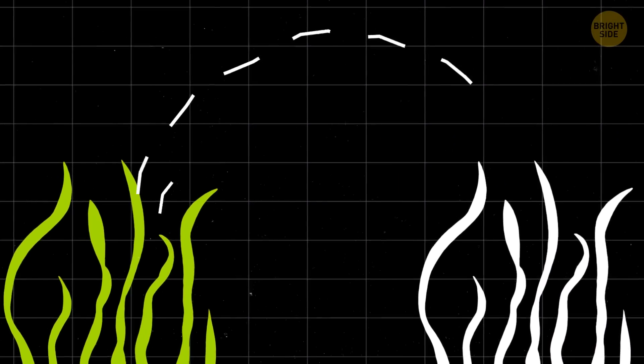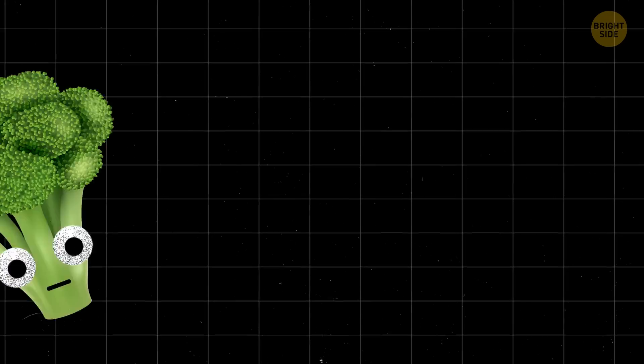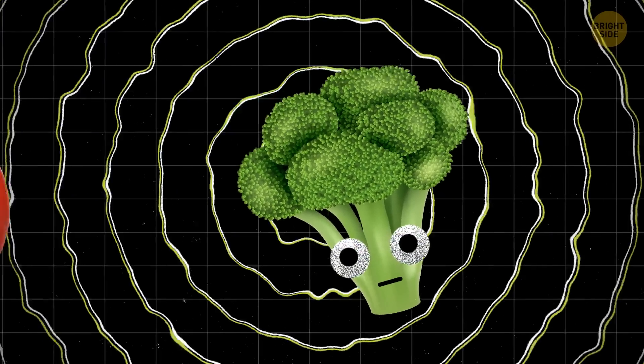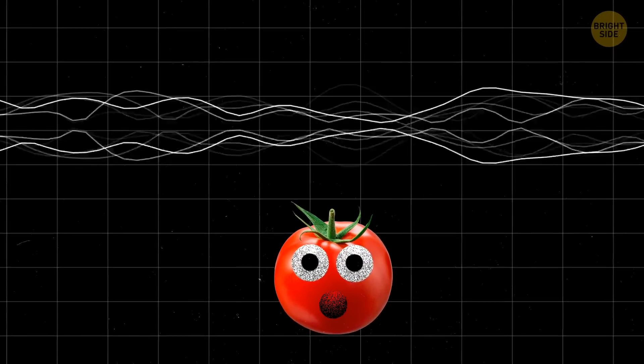Well, it turns out plants can talk. Well, kind of. Scientists found out that plants actually make ultrasonic clicks when they're stressed. Imagine tomatoes and tobacco plants in a jam. They're making sounds like popping bubble wrap, but way too high for us to hear.